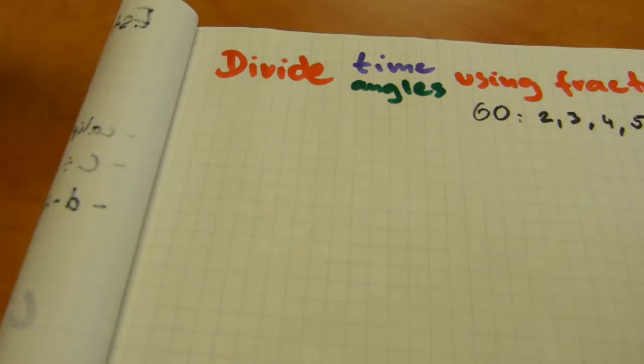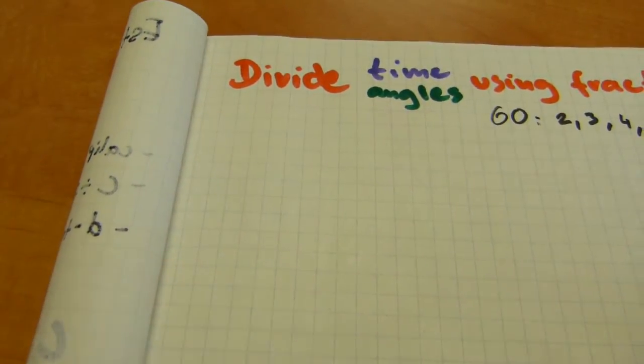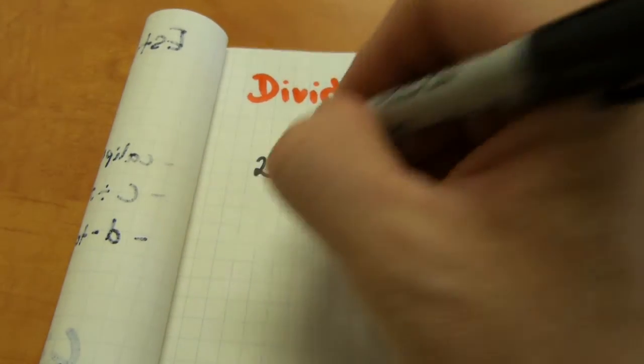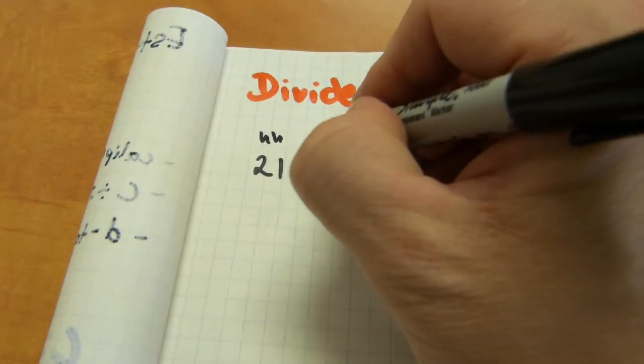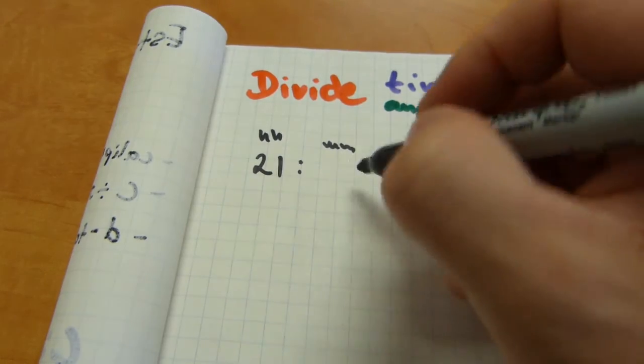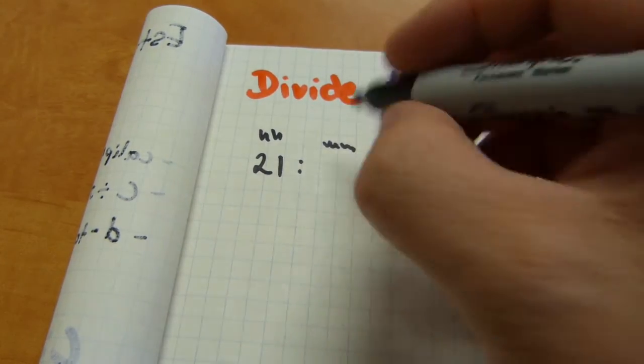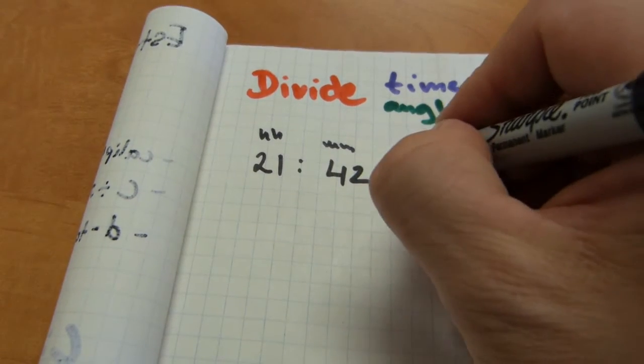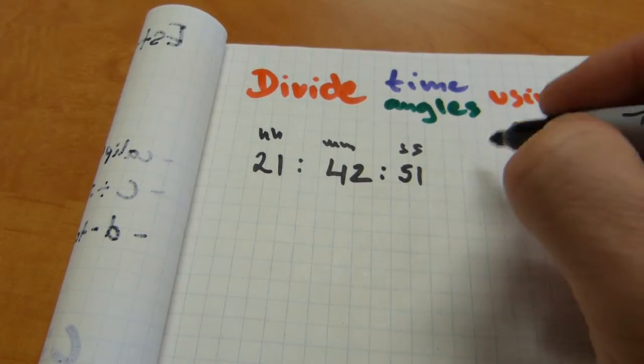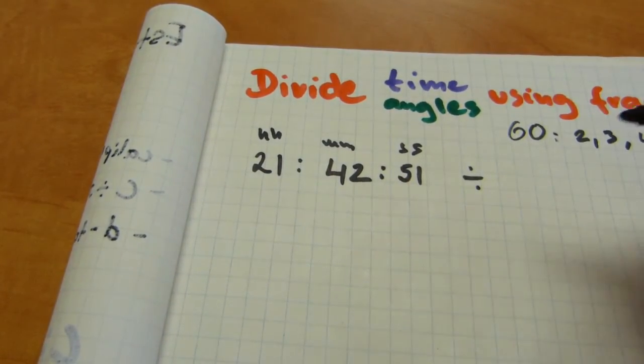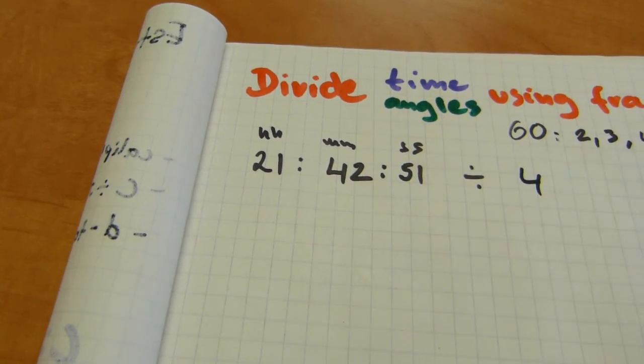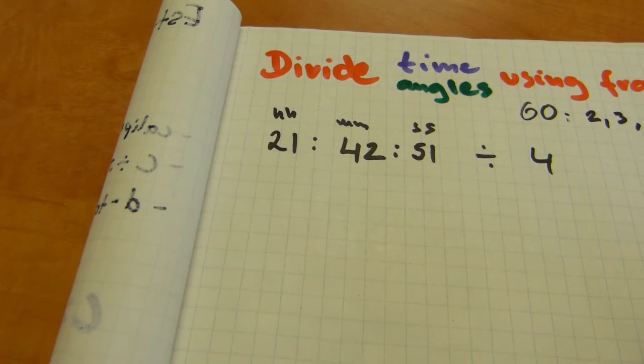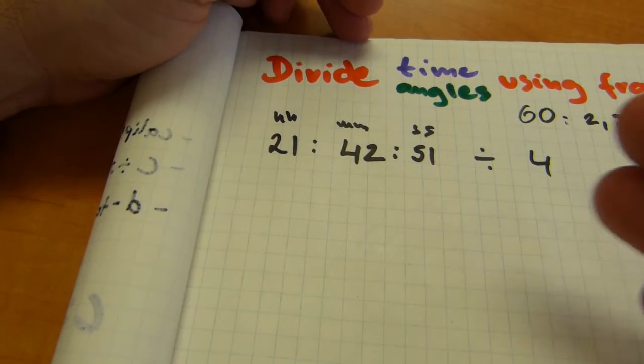Now, I'm going to start with a simple one here. Say 21 hours, 42 minutes and 51 seconds in this format. And let's divide it by an easy number such as 4. 4 is going to be an easy number so you can see how the mechanics of this works.